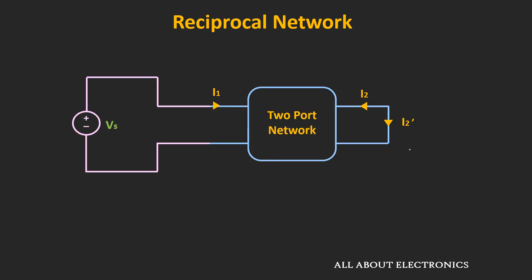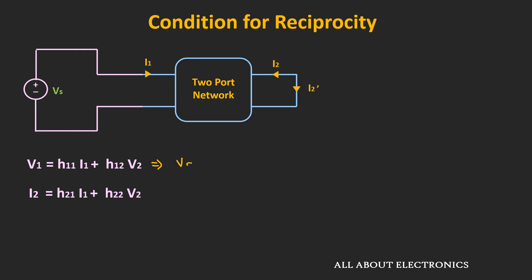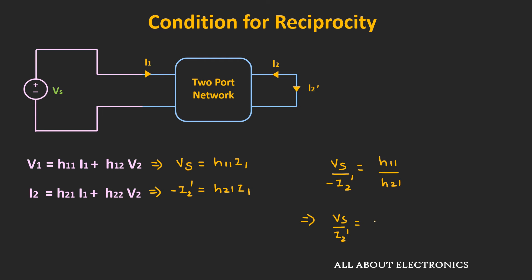Now let's prove this condition. Applying voltage Vs at port 1 and short-circuiting port 2 means V1 equals Vs and V2 equals 0, with I2 equals minus I2'. From the first expression: Vs equals H11·I1, and from the second: minus I2' equals H21·I1. Taking the ratio, Vs divided by minus I2' equals H11 divided by H21.